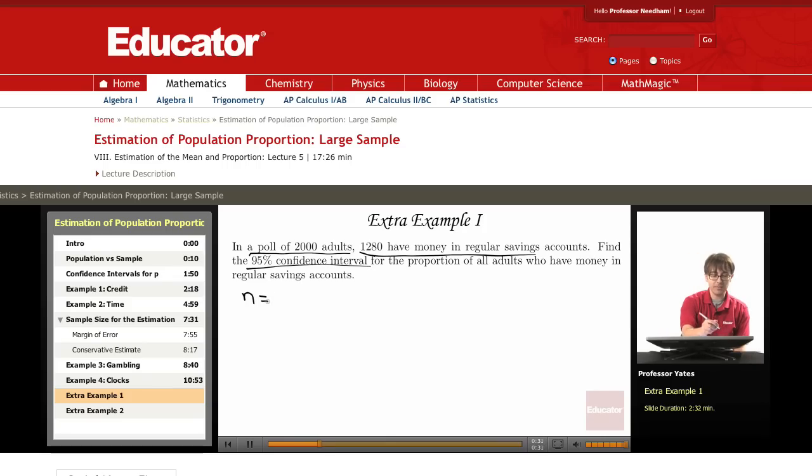First thing we're told is n equals 2,000. Now how am I going to find my sample proportion, p hat? Well, I'm taking the number of people in my sample who have regular savings accounts and I'm dividing that by the total number of people in my sample. So this gives me 0.64. I'm dealing with 95% confidence so alpha equals 0.05. That means alpha over 2 equals 0.025.